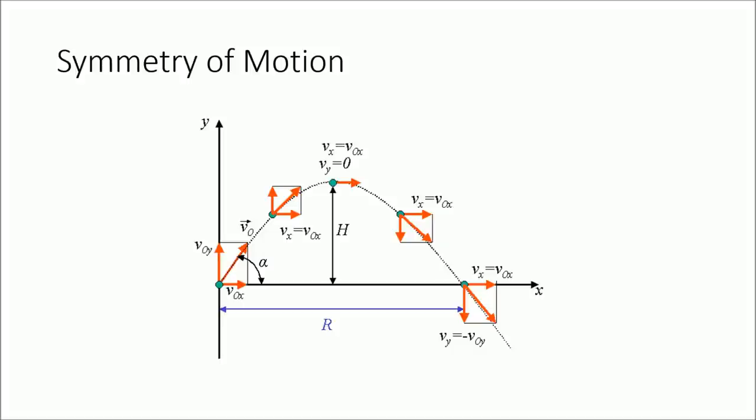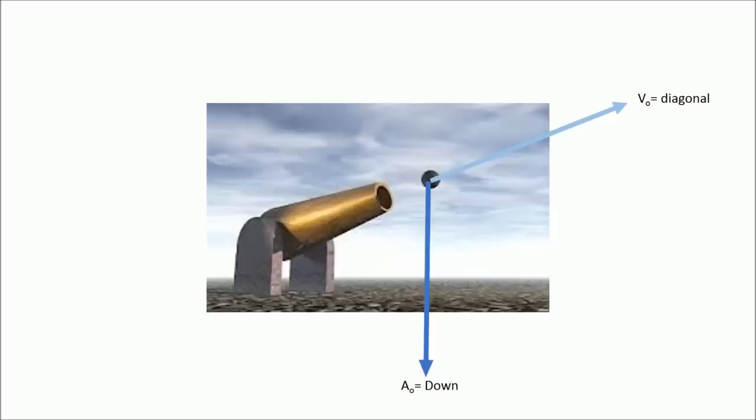We use the same equations as we did for cliff and throw-up problems. With cannon problems, the initial velocity must be broken up into separate components, x and y. This is done by multiplying the initial velocity by the trigonometric functions cosine theta and sine theta for the x and y directions respectively. Theta is the angle at which the object is initially fired.